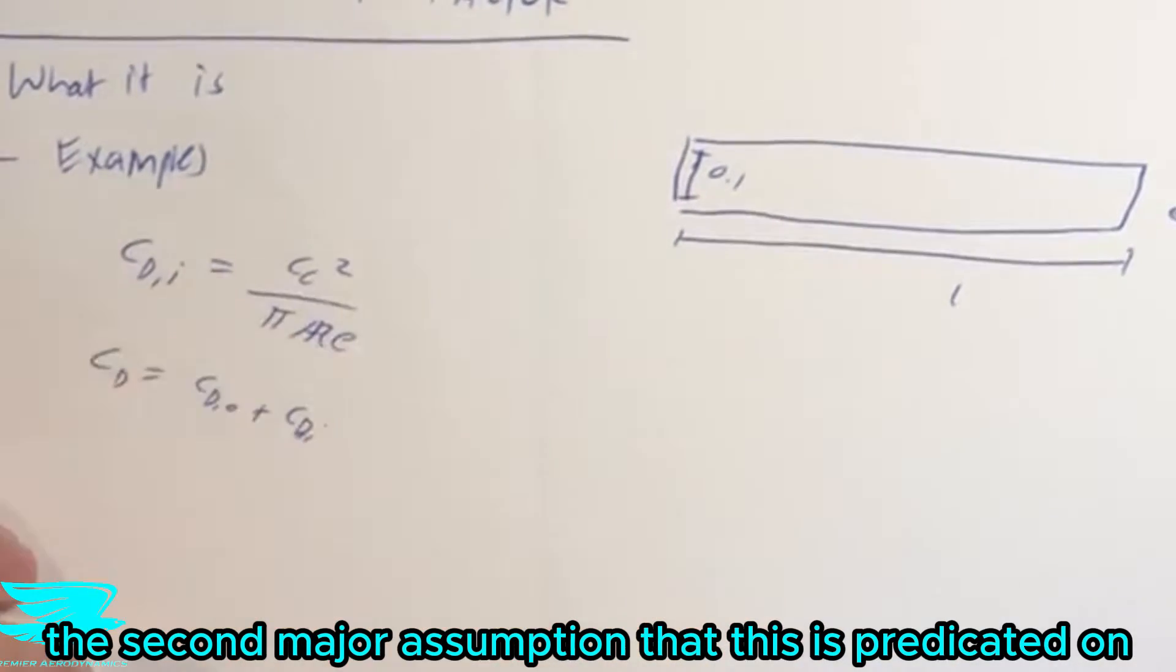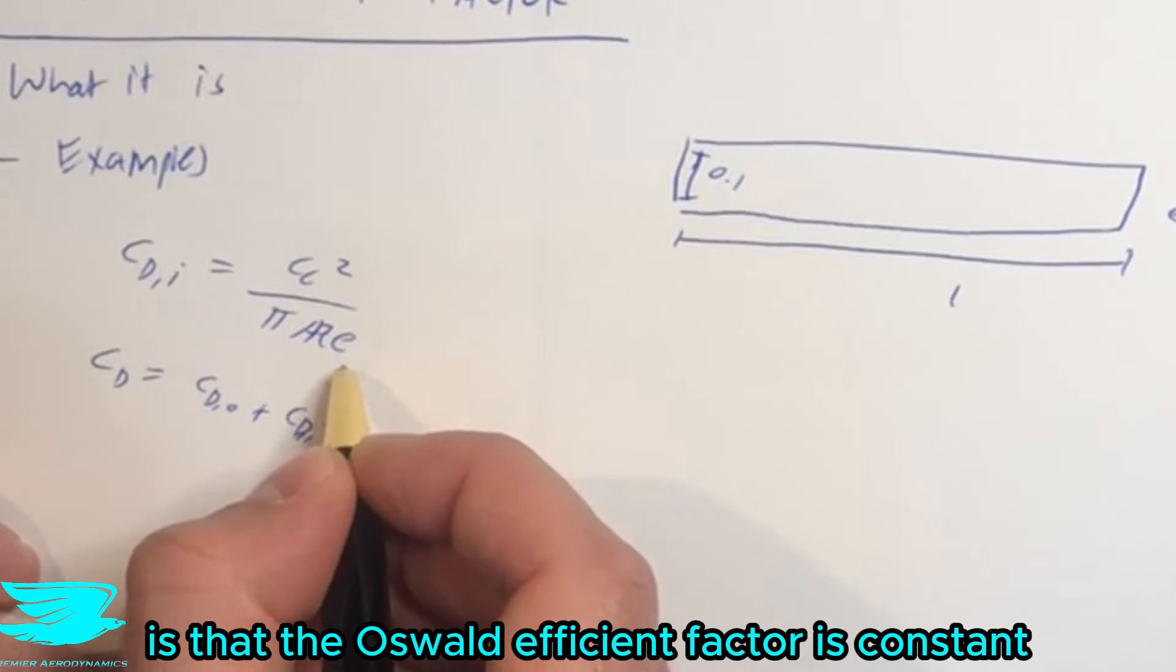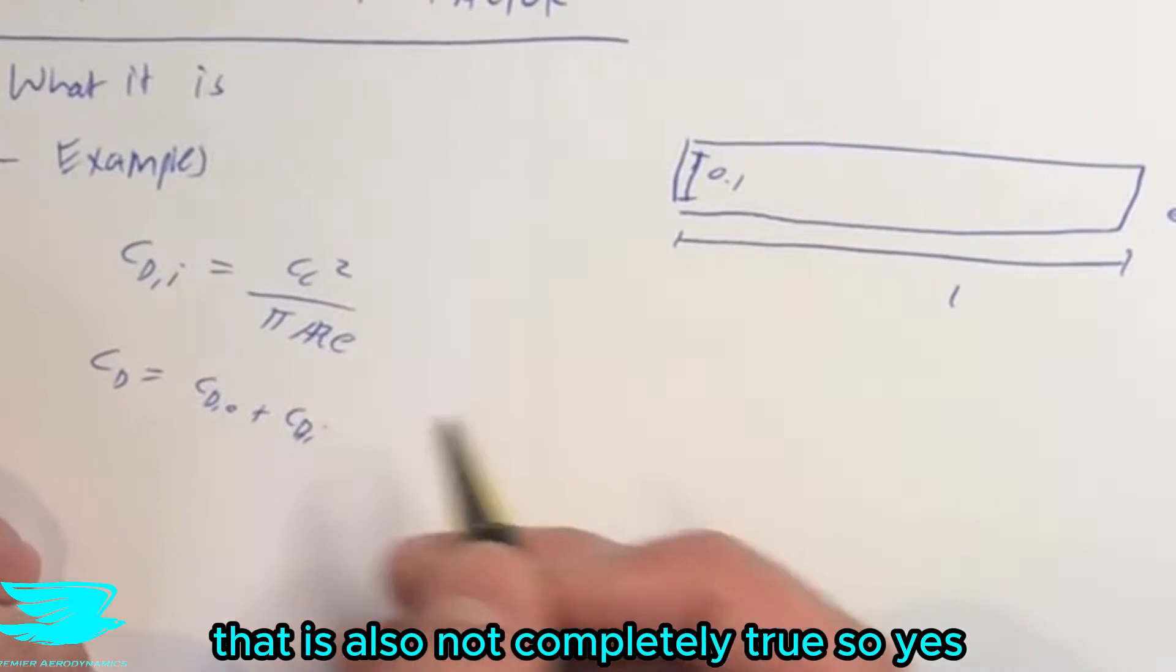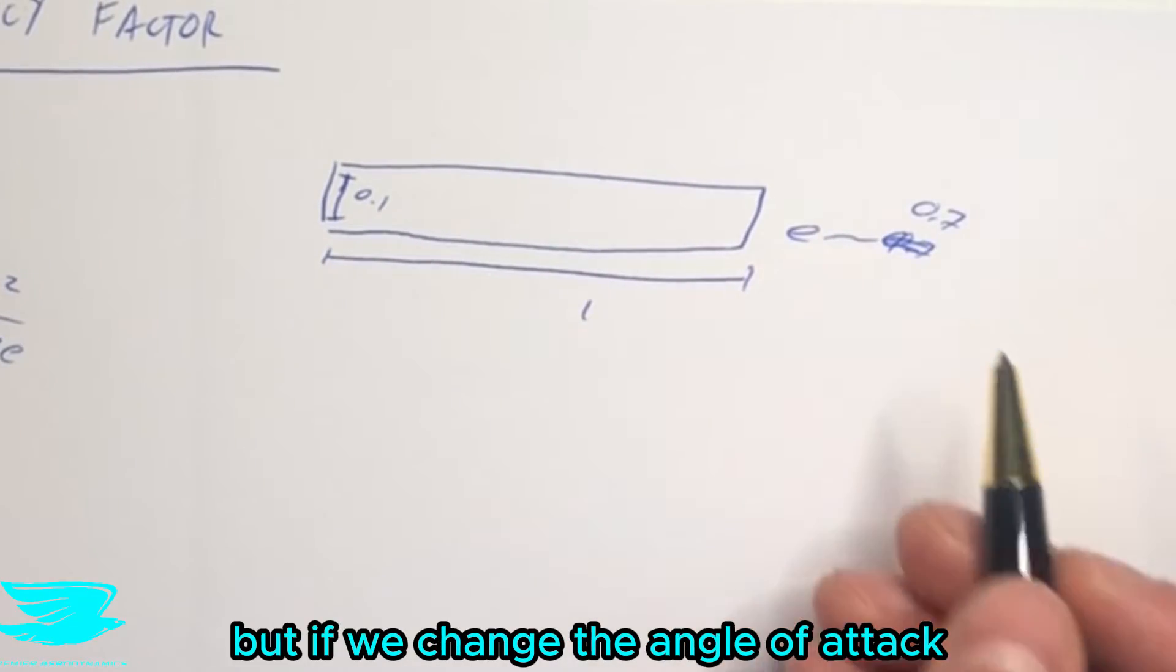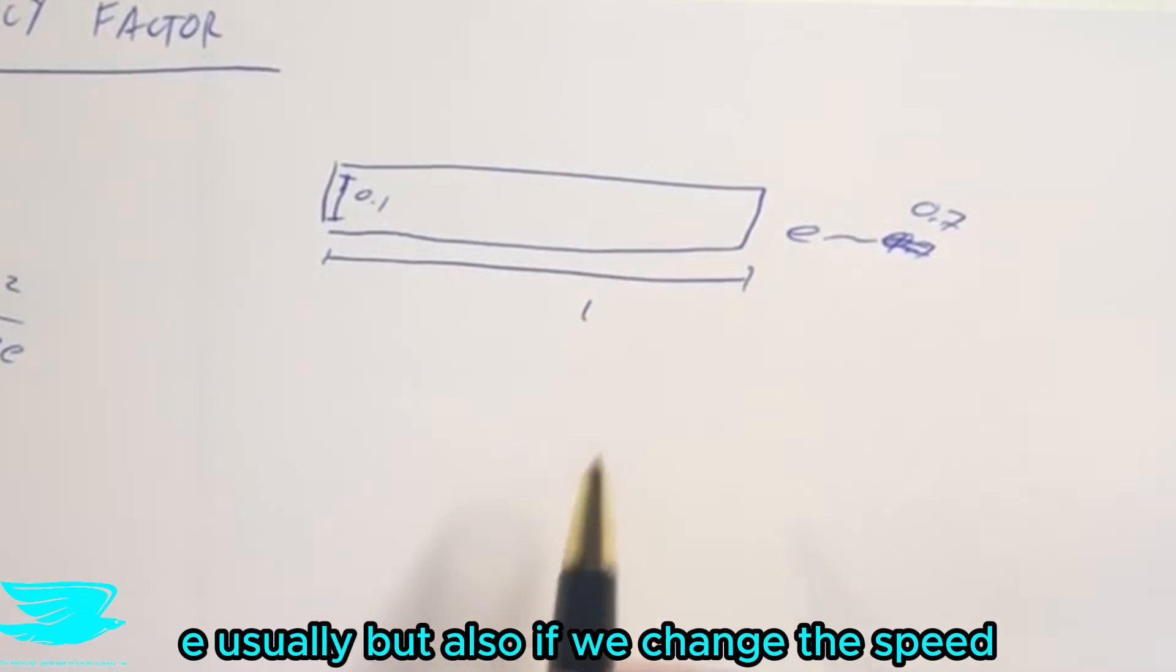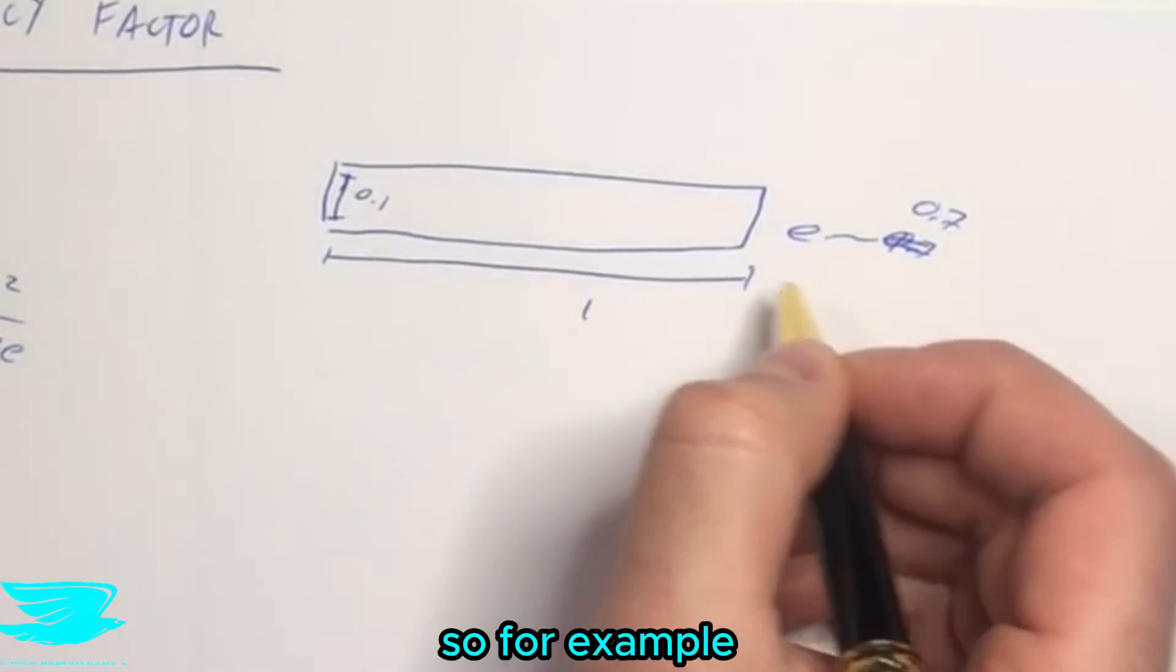The second major assumption that this is predicated on is that the Oswald Efficiency Factor is constant. That is also not completely true. So yes, it is generally constant. But if we change the angle of attack, that does change the E usually, but also if we change the speed.